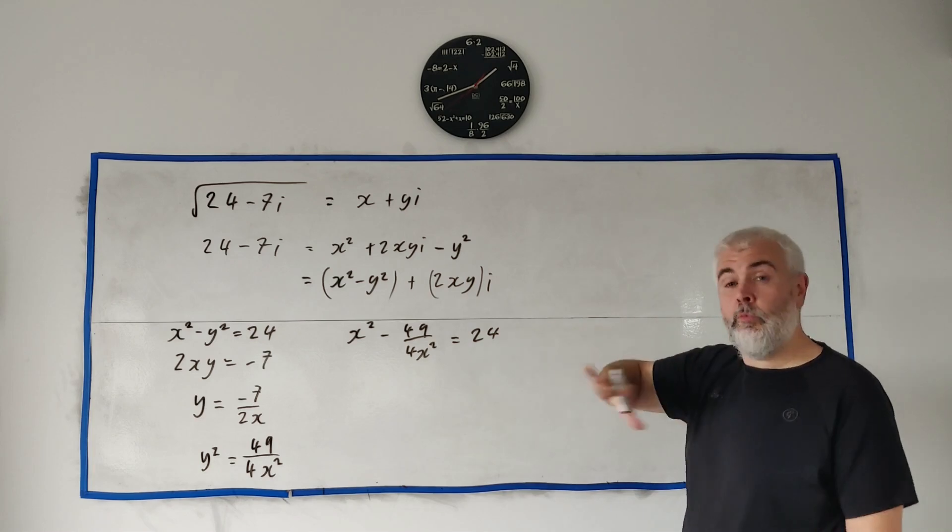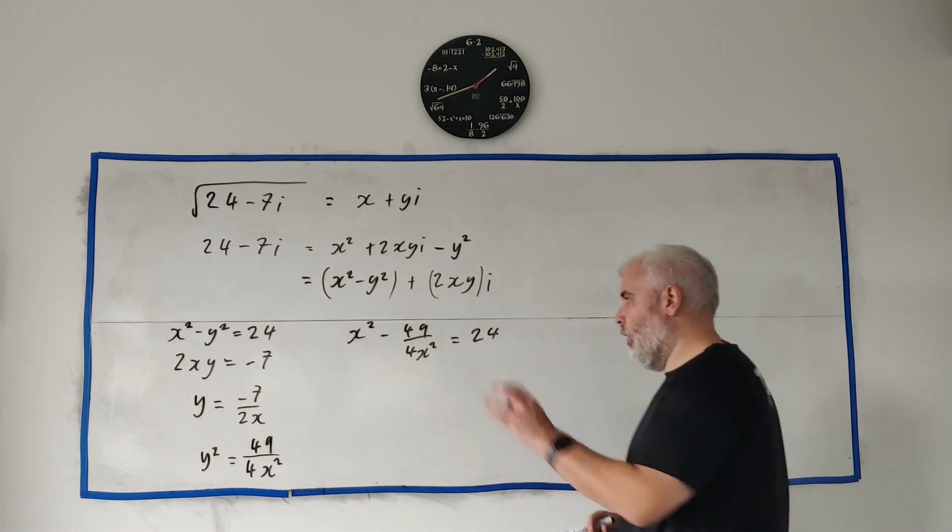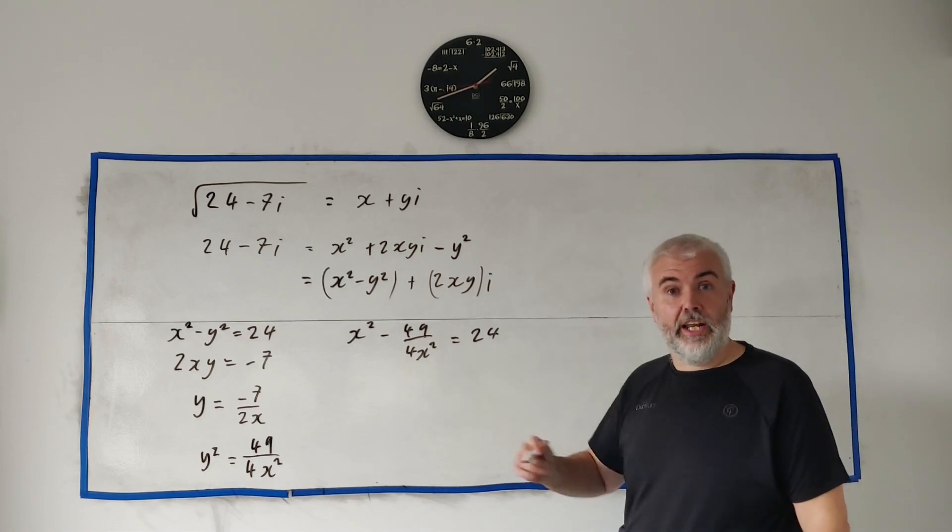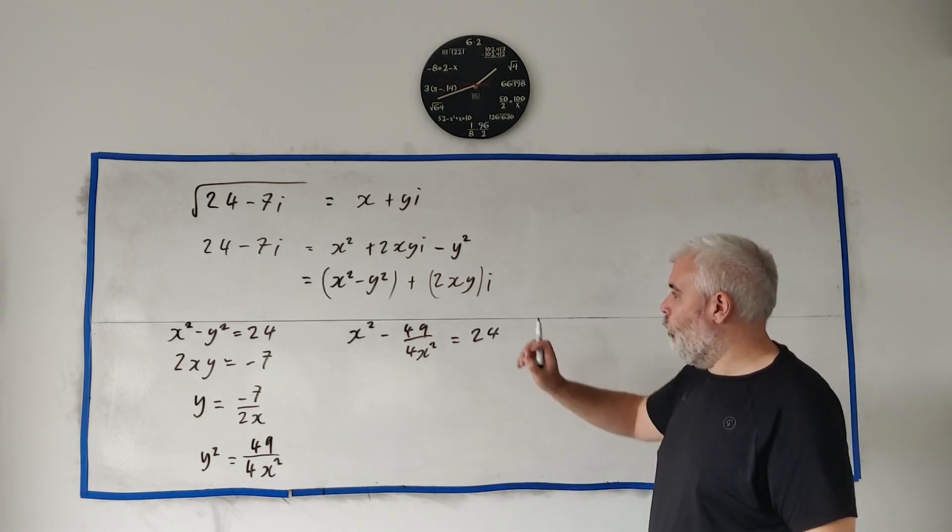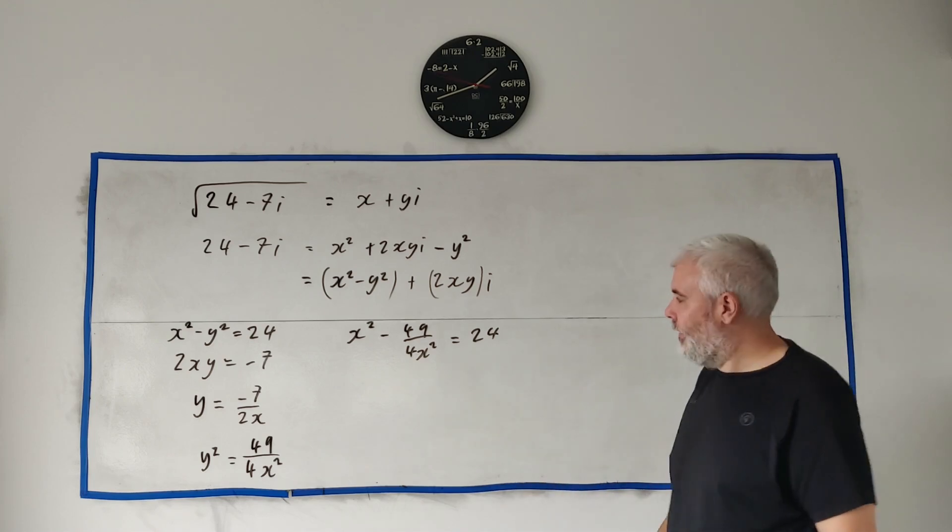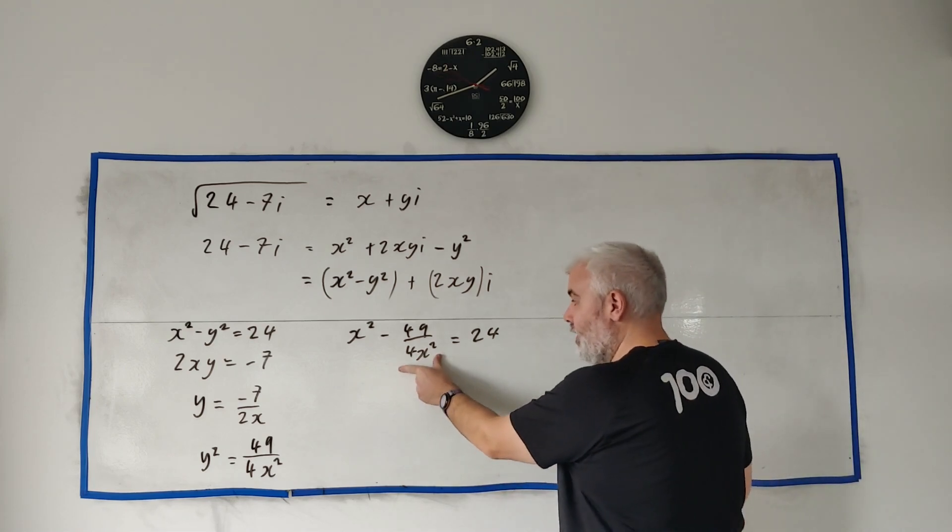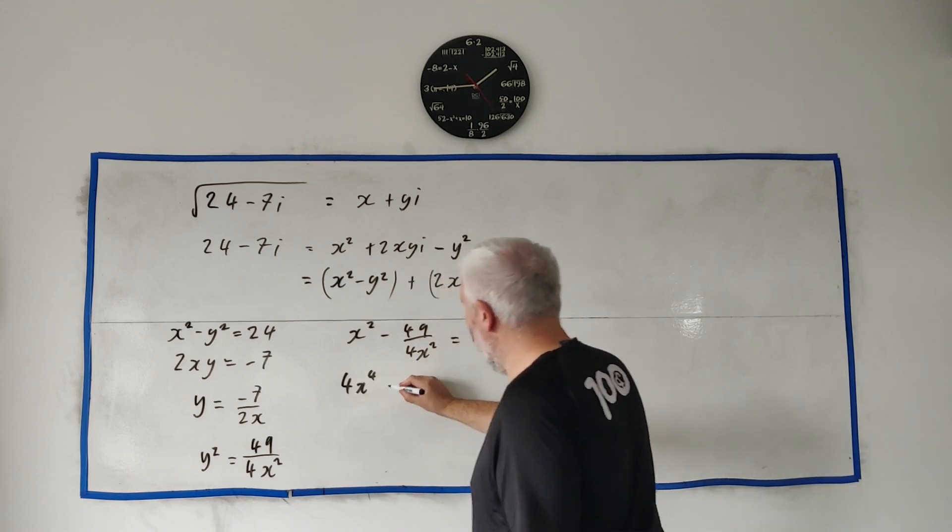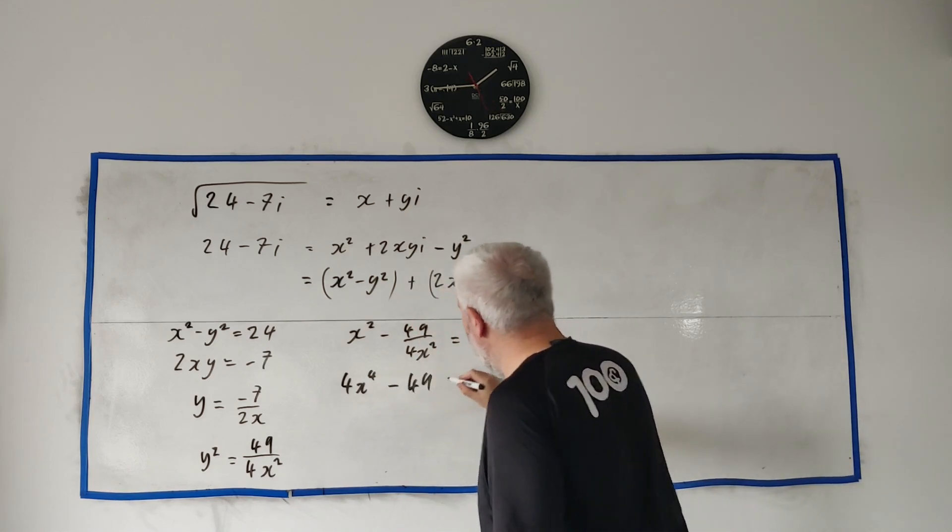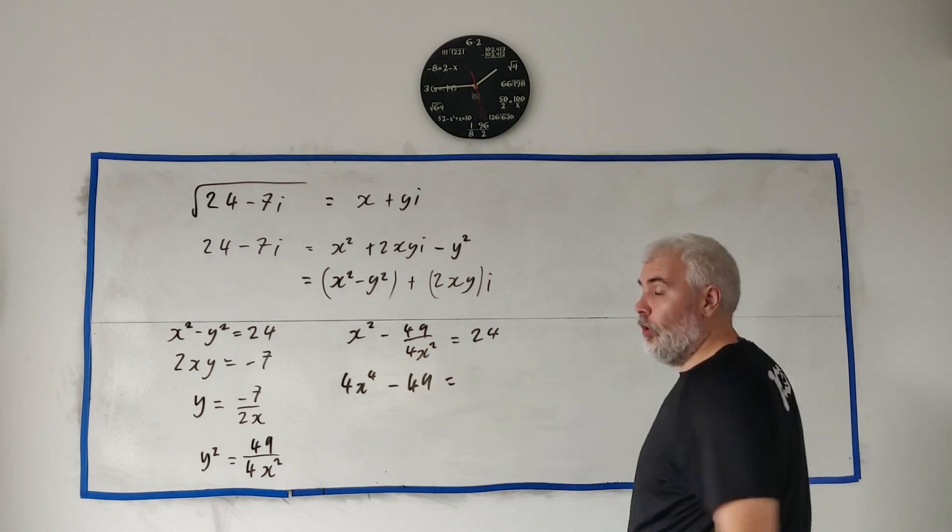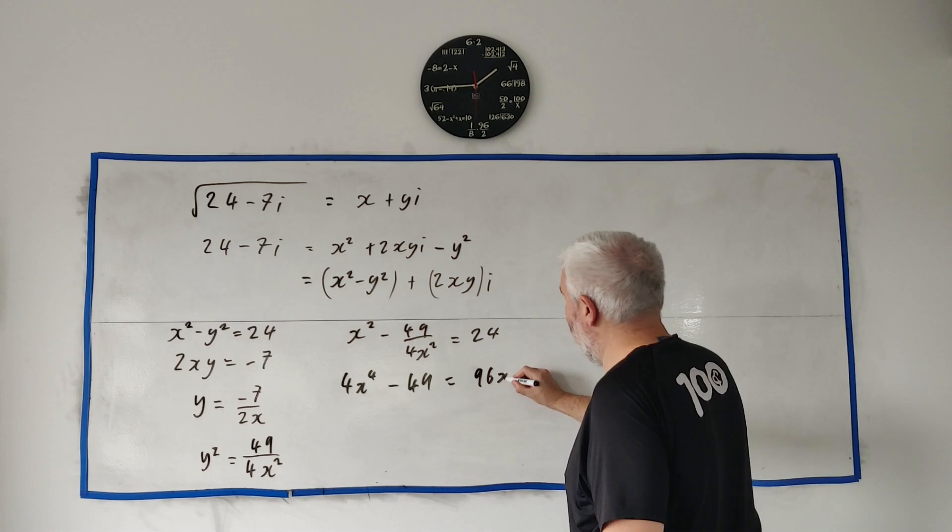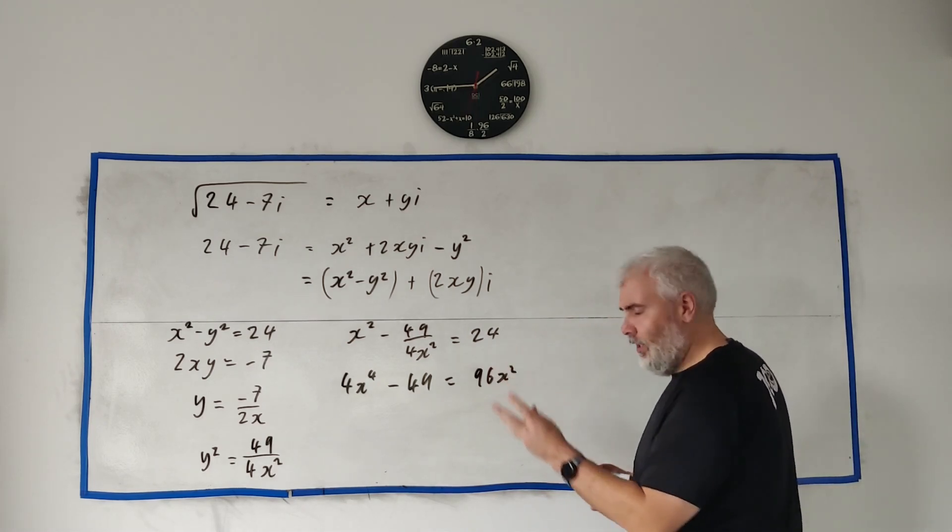Okay, what has the question moved on to now? We're away from simultaneous equations, we're now onto a quadratic even though it doesn't look like it quite yet. We need to make this look like a quadratic. If we multiply everybody by this bottom row, we get 4 times x to the power 4 minus 49 is equal to 96x squared.